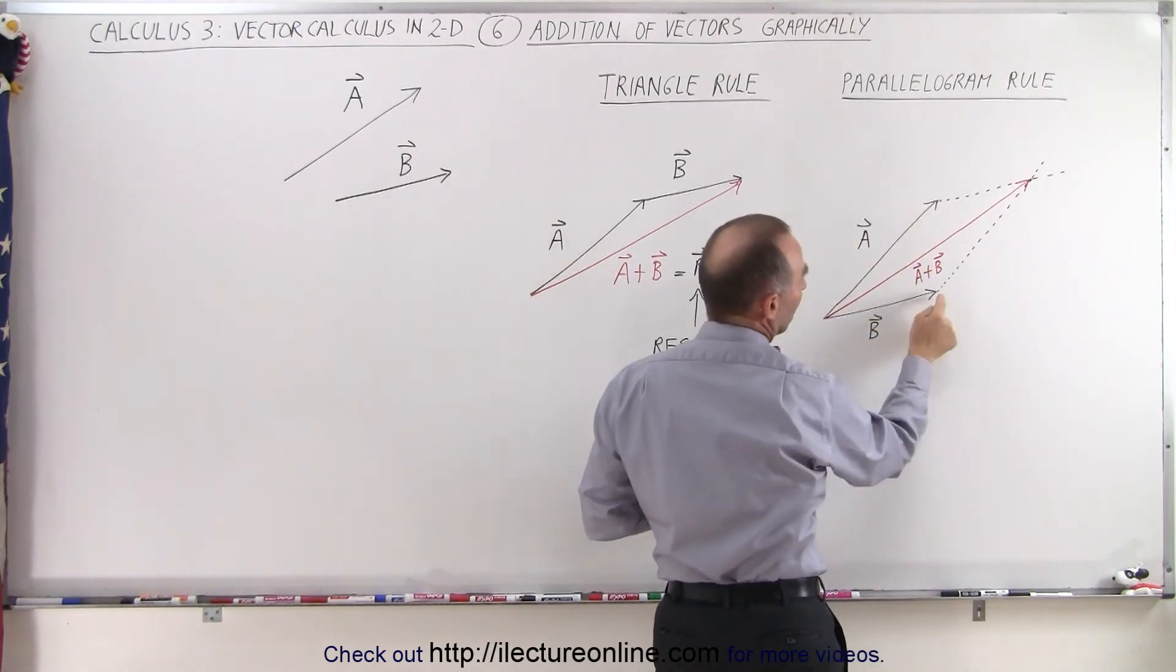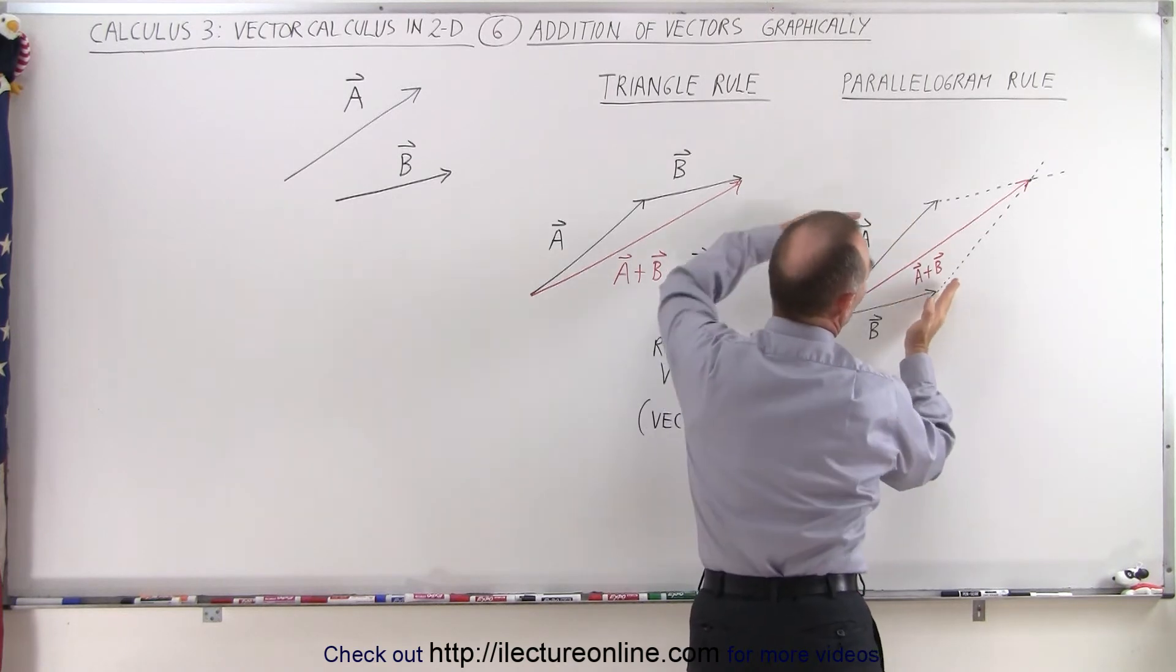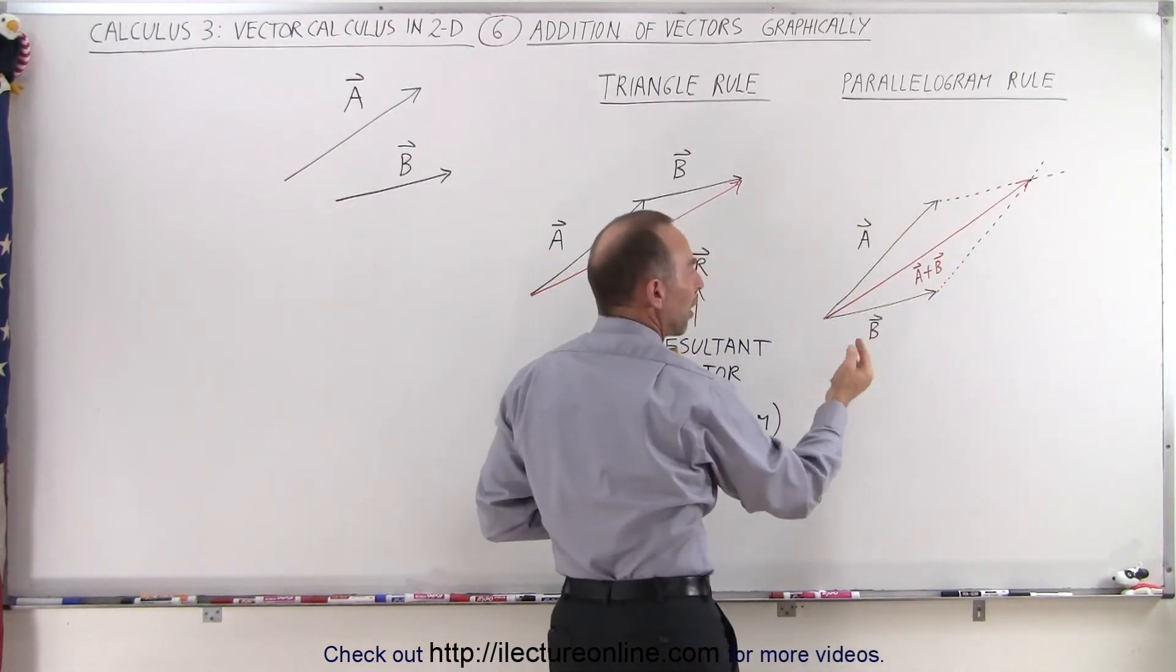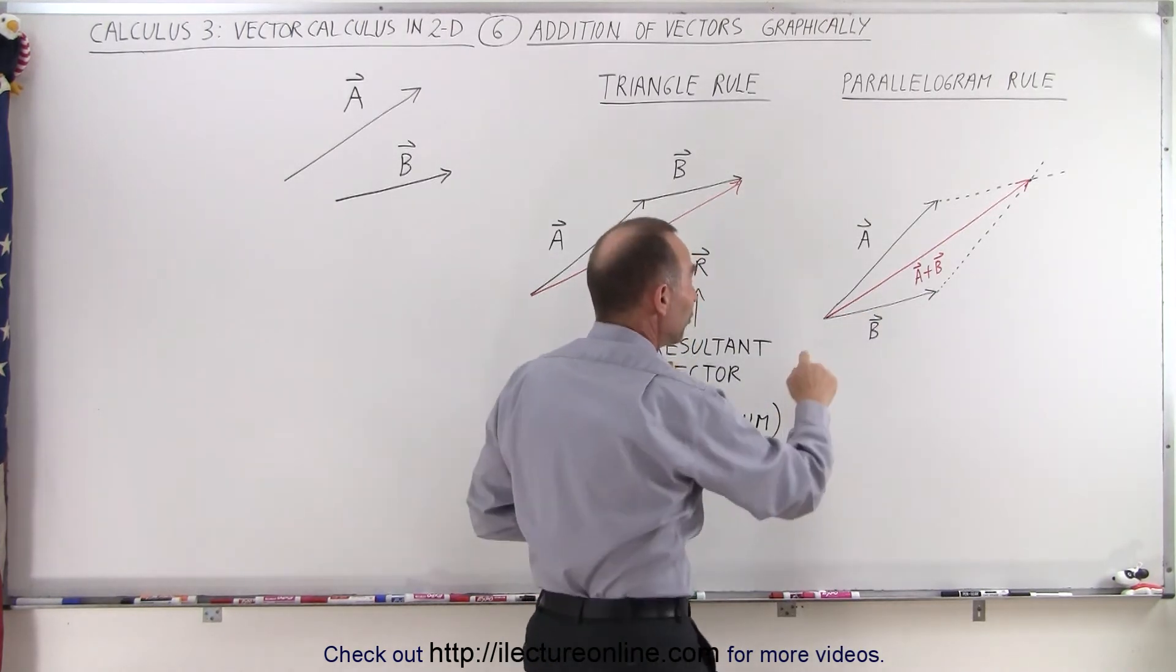And then you start from the tip of the second vector and draw a line that's parallel to the first vector. And where those two parallel lines meet, you make a little point and then you draw a third vector, which of course represents the sum of A and B, the sum of the two vectors.